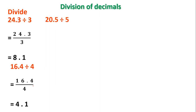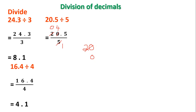Let's take the next problem: divide 20.5 by 5. Write the dividend in the numerator and the divisor in the denominator. Start dividing the numerator by the denominator. The highest place is tens; 2 is smaller than 5, so 5 zeros are 0, remainder is 2. Joining the next digit 0 to 2, the number becomes 20. 5 fours are 20; I write 4, remainder is 0.